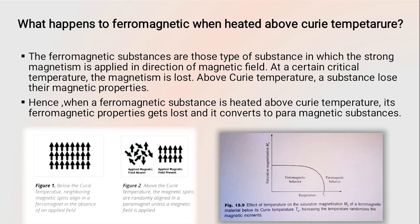What happens to a ferromagnetic material when heated above the Curie temperature? At any finite temperature above absolute zero, thermal energy causes the magnetic dipoles of a ferromagnetic material to deviate from perfect parallel alignment. As temperature increases, a critical temperature is reached where the magnetic order completely disappears and the material becomes paramagnetic — meaning the magnetic dipoles are oriented randomly, and the net magnetic effect becomes nil.